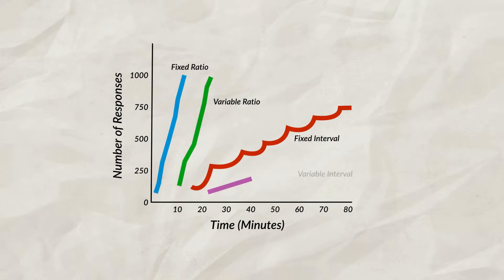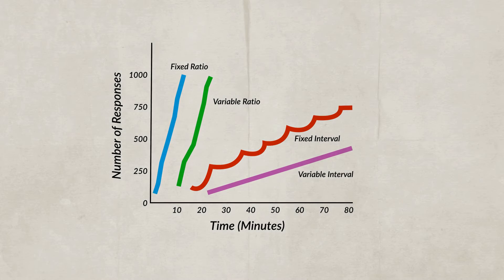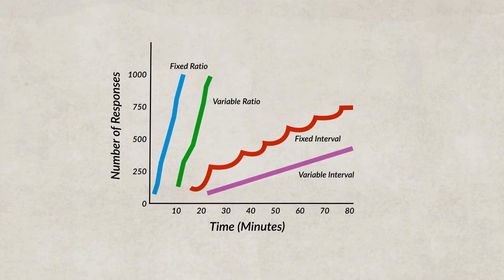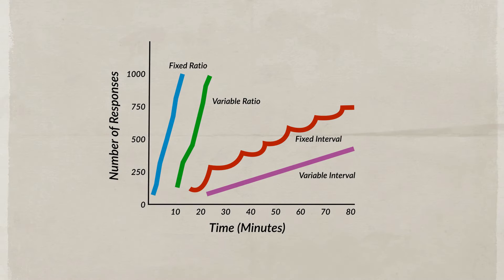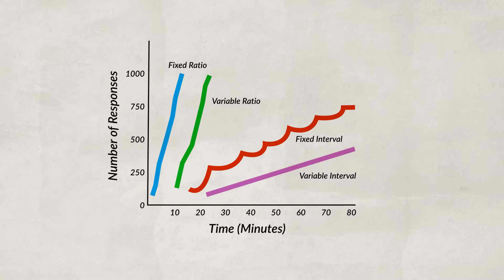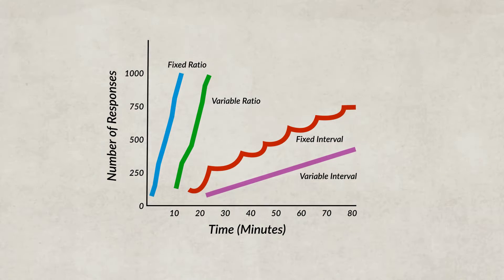The last schedule is a variable interval schedule, which reinforces responses after seemingly random amounts of time. This traditionally produces a slow and steady response since the individual has no way of knowing when the payout will occur. An example is companies that use secret shoppers to give bonuses or gift cards to employees doing their jobs correctly. Employees can't know when the secret shopper will arrive, so they're motivated to always be on task, but not necessarily to boost productivity or sales numbers.